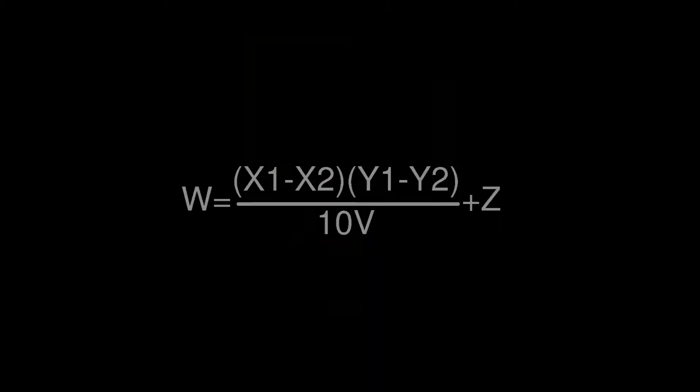The Algebra uses this transfer function to manipulate the voltages. X2 is subtracted from X1, Y2 is subtracted from Y1. The results of these subtractions are multiplied together and divided by 10. The Z input is then added to this value and output out the jack labeled W.